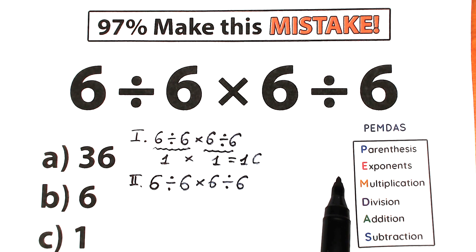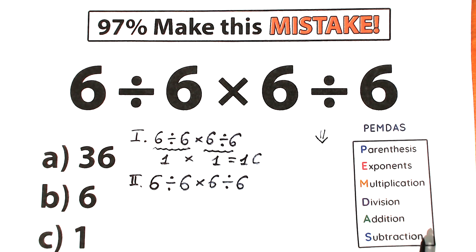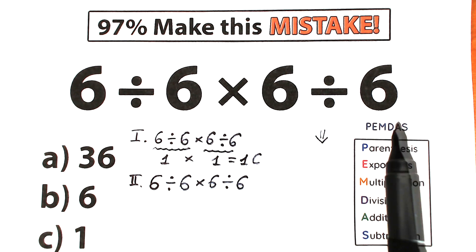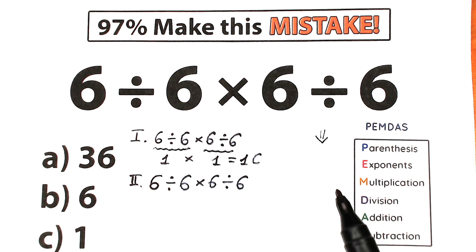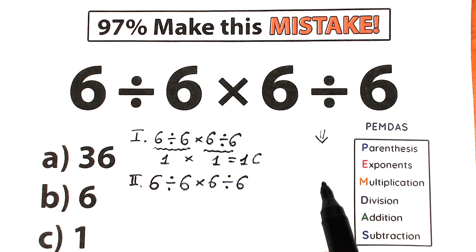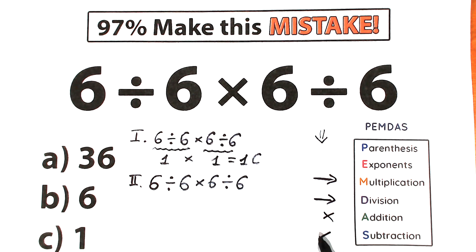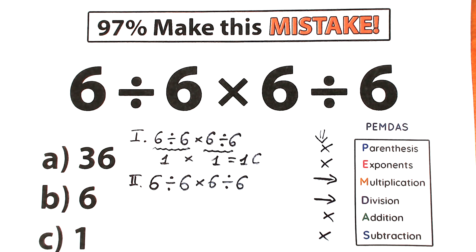Let's solve this according to PMDMC, which works from top to bottom in strict order: parentheses have the highest priority, then exponents, then the multiplication-division group, and finally addition and subtraction. Scanning our challenge, we have only division and multiplication — no parentheses, no exponents, no addition or subtraction — so we go straight to the multiplication and division group.